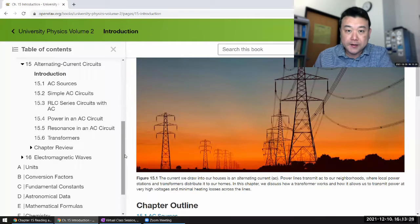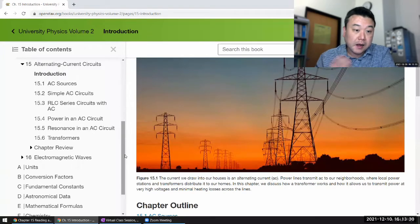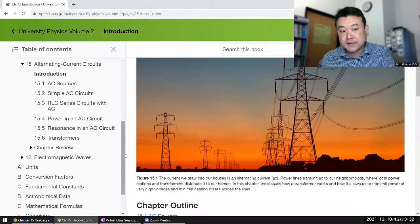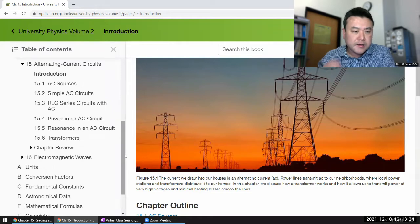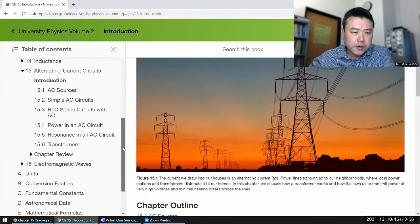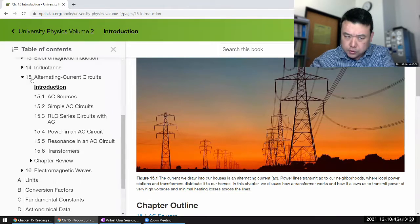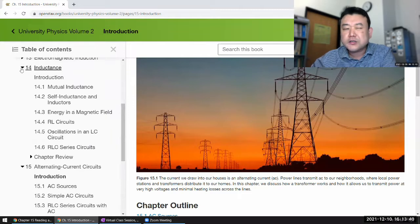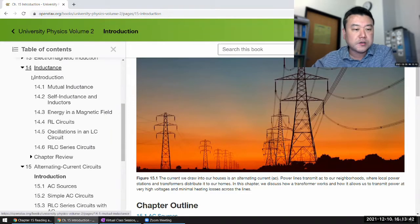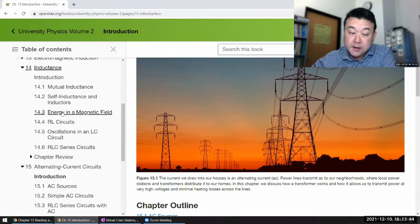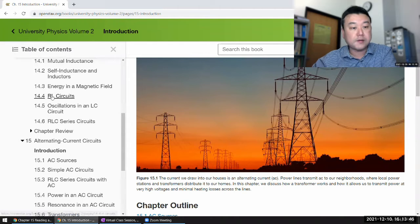Chapter 15 covers alternating current or AC circuits. As we work with AC circuits, we are continuing to use the linear circuit elements that we finished introducing in Chapter 14 and started working with for time-dependent circuits.